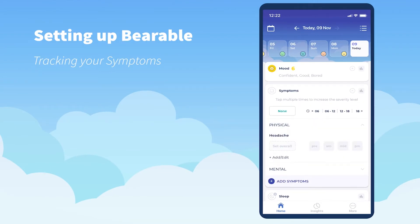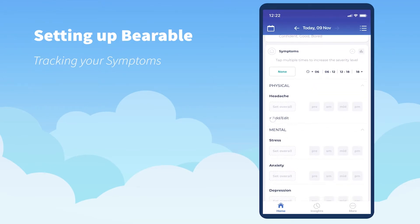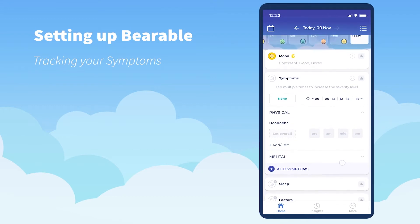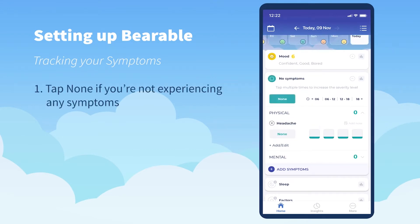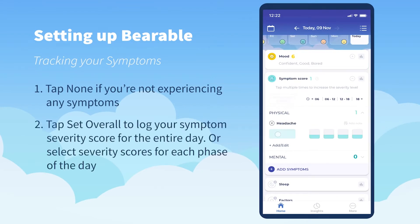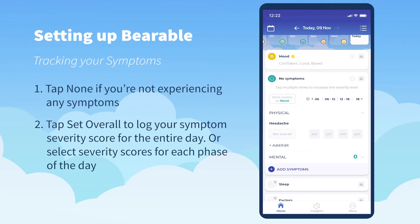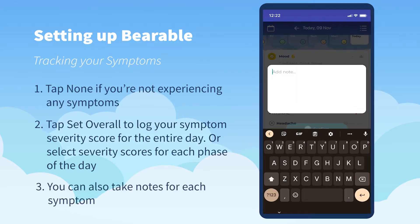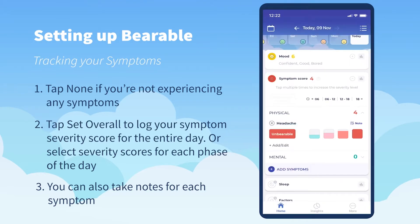In Symptoms, you can see there are mental health and physical health symptoms. You can press none if you're not experiencing any symptoms for the day, or you can use the set overall button to set your severity score for each symptom between mild and unbearable. You can also do this for different phases of the day, and you can add notes for each symptom as well — this comes in handy if you're sharing symptom information with a medical professional.